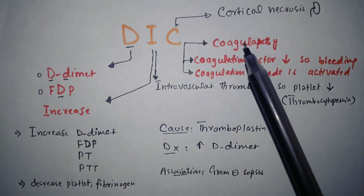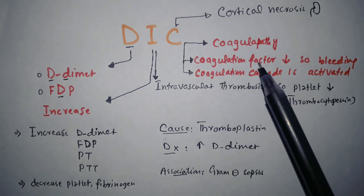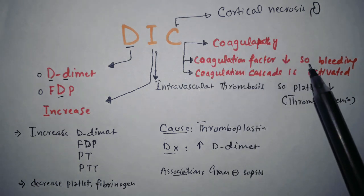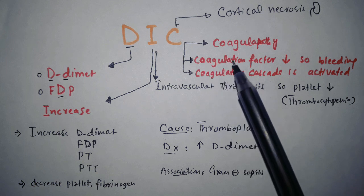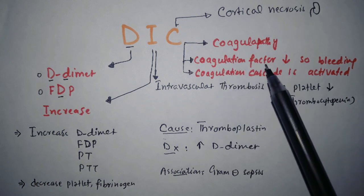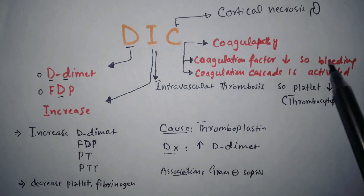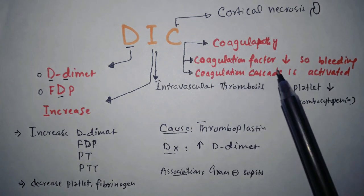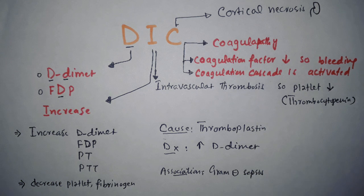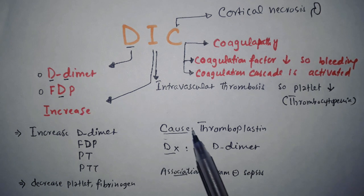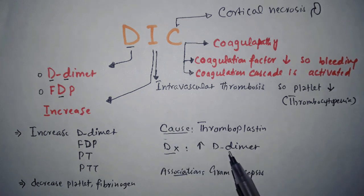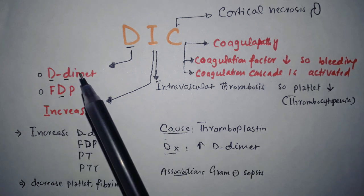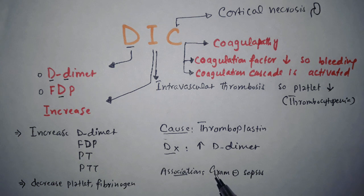C is for cortical necrosis in the kidney. C is for coagulopathy. C is for coagulation factor decrease — as there is thrombosis, coagulation factors decrease, which leads to bleeding. So you will see bleeding in DIC as the coagulation cascade is activated. The cause of DIC is thromboplastin, and the key diagnostic marker is D-dimer. DIC is strongly associated with gram-negative sepsis.